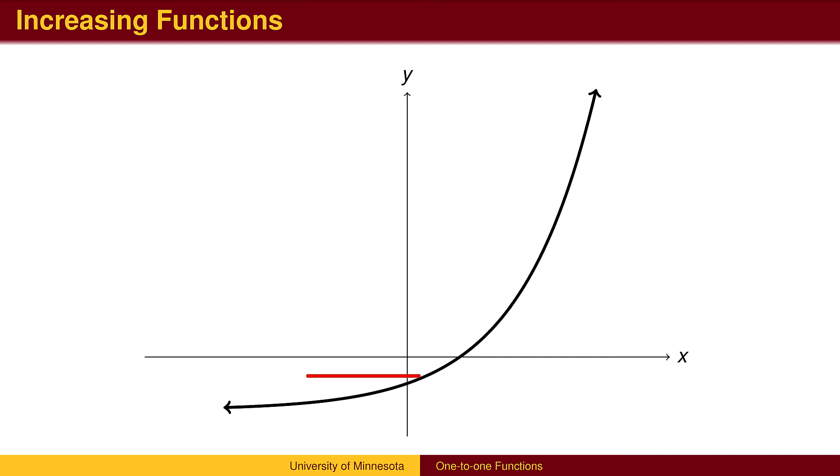Any continuous one-to-one function will either be strictly increasing or strictly decreasing. Once a function begins to go up, it can't turn around and go down and still be one-to-one.